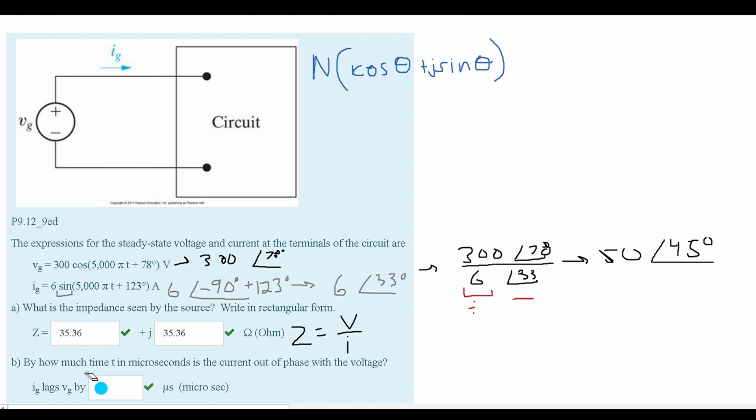In part B, we are asked by how much time t in microseconds is the current out of phase with our voltage. So we want to find the period. To find the period, there's two formulas we could use. There's nothing involving frequency here, so instead we use omega equals 2π times frequency.